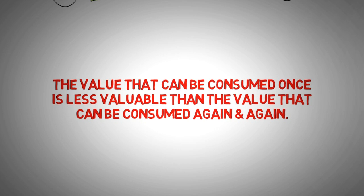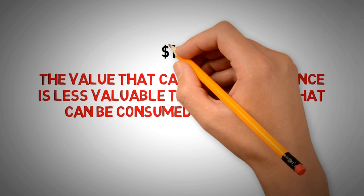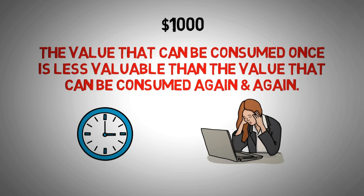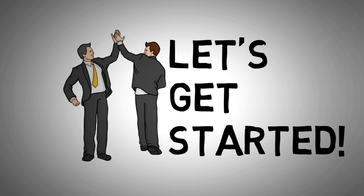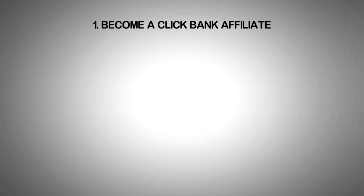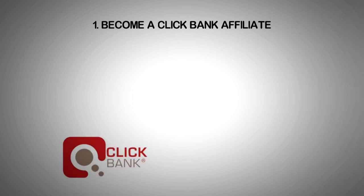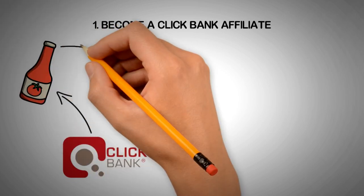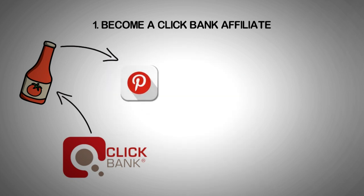Now let's get practical and see how you can build your own sources of passive income leveraging the power of the internet, which can pay you as much as $1,000 — and you can build it in one day if you put in the required time and effort. The first method: become a ClickBank affiliate. Create a ClickBank account, select a niche, and find products to promote. You're going to promote your products on Pinterest, so make sure you have a Pinterest account — it's absolutely free to create.